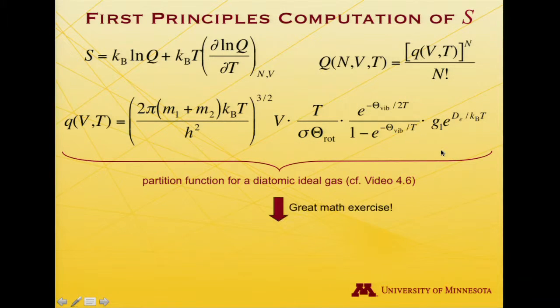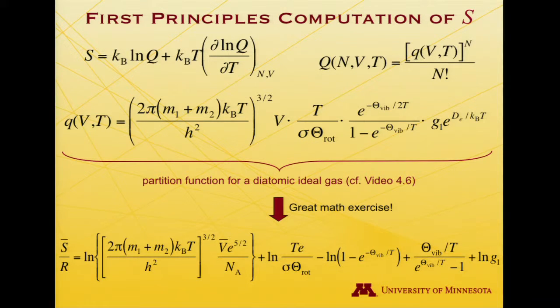And what we need to do, and this is a wonderful math exercise, is take this q, this little q, plug it in here to the nth power over n factorial in order to get capital Q, take its partial derivative with respect to T, and then also just multiply the log of it by Boltzmann's constant. And so I have here great math exercise. I'm not actually going to do it term by term here. It's a lovely thing to sit down at a table with and try to verify what I'm about to show you, but it's just straightforward differentiation.